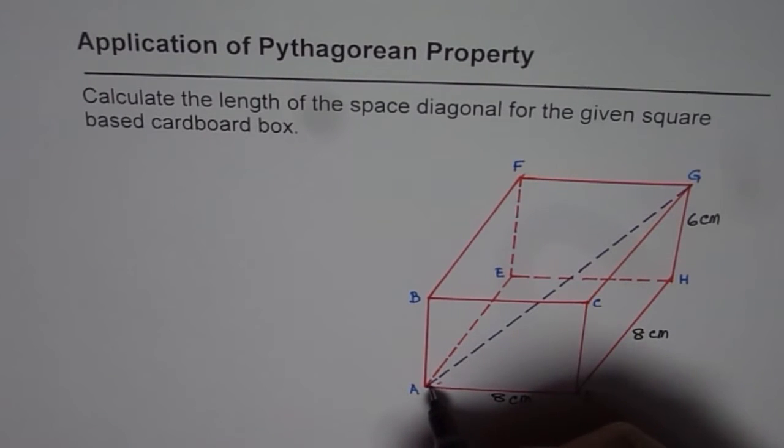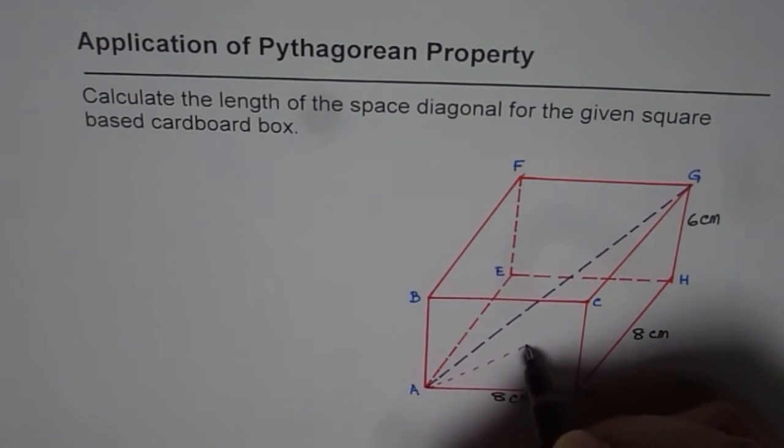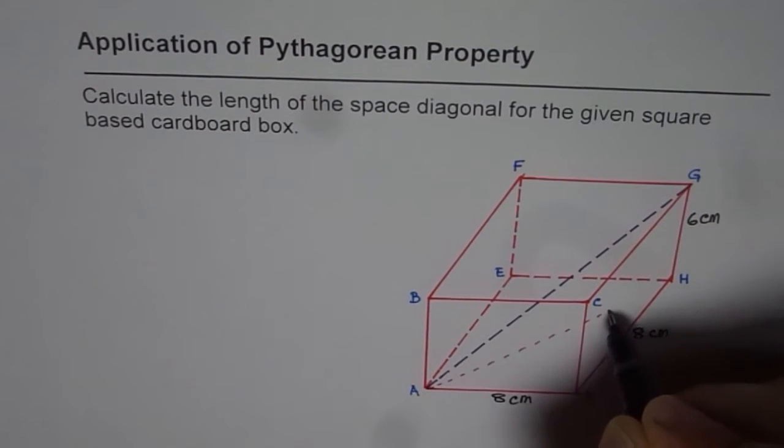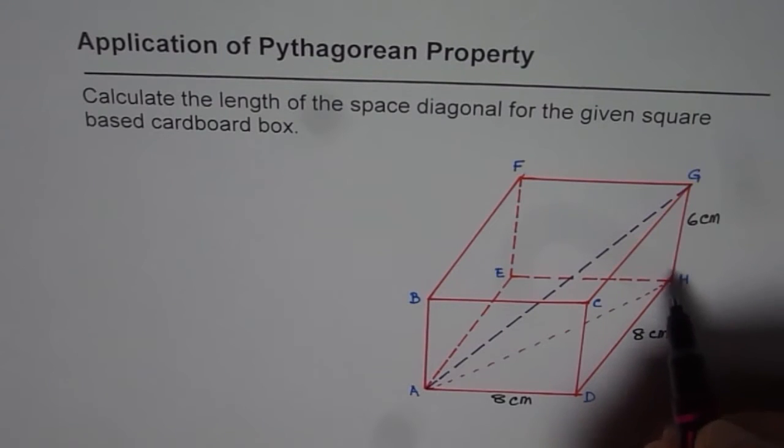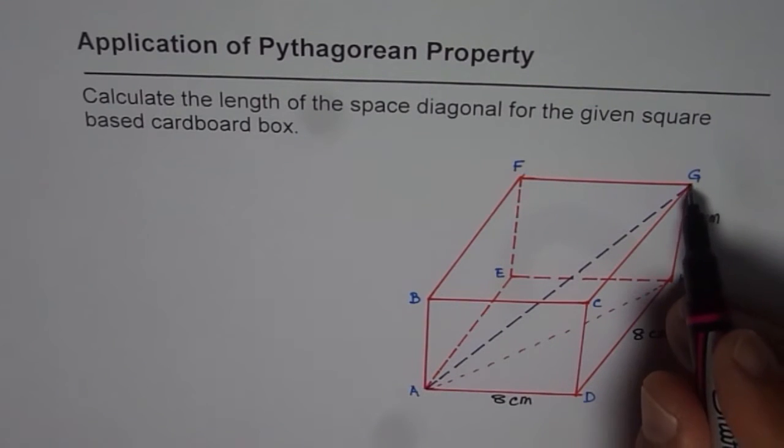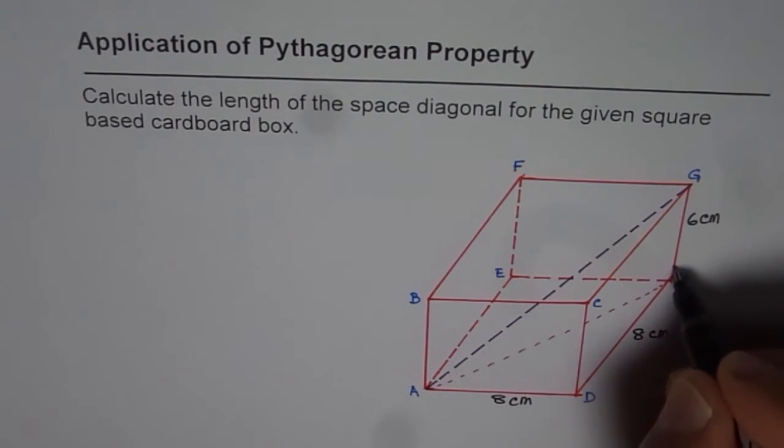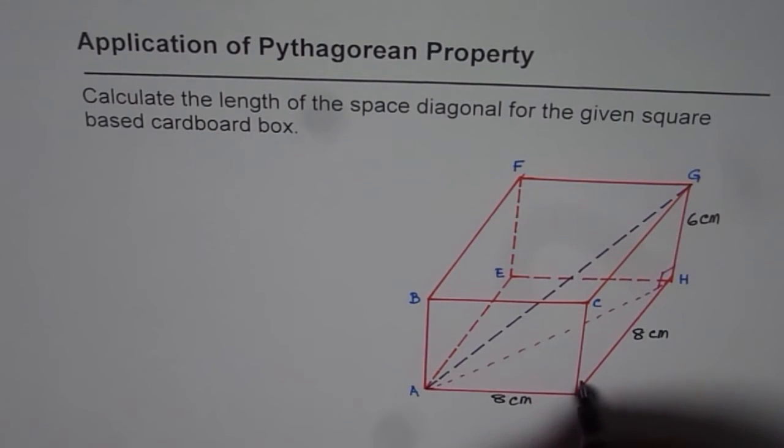find the length AH and then use the triangle AHG which will also be a right triangle. This is a box. This is also a right triangle and here also we have right triangle.